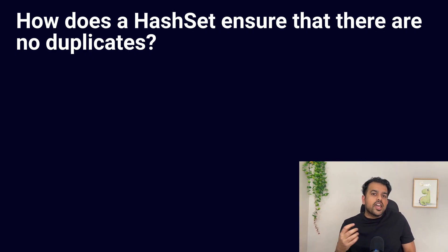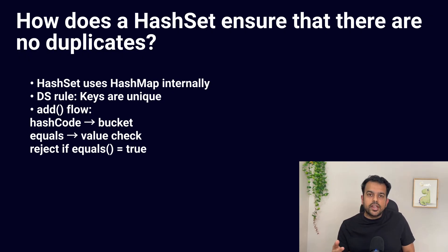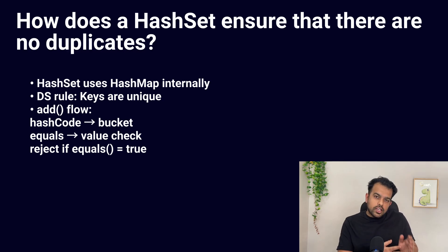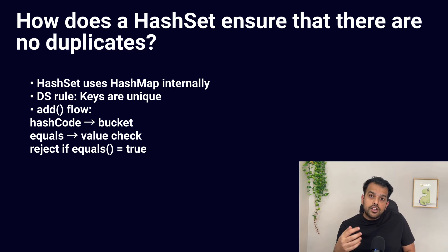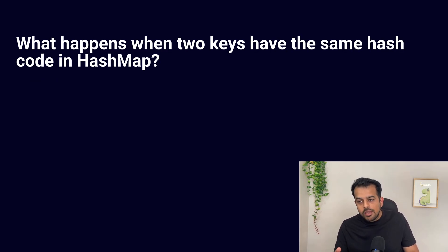The next question: how does HashSet ensure there are no duplicates? HashSet internally uses a HashMap. When you add an element, it is stored as a key inside that internal HashMap. Since HashMap never allows duplicate keys, HashSet automatically blocks duplicates. When you call the add() method, Java checks the hash code of the value to find which bucket the element should go into, then uses the equals() method to confirm whether the element already exists. If equals() returns true for an existing element in that bucket, the new one is rejected. So hash code finds the location, equals() verifies the value, and together they protect uniqueness.